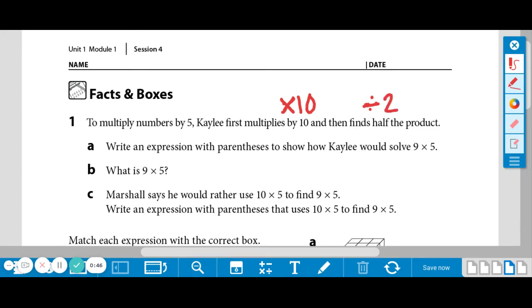So just so that we have that as a reference. Write an expression with parentheses to show how Kaylee would solve 9 times 5. So remember her strategy is finding something times 5.